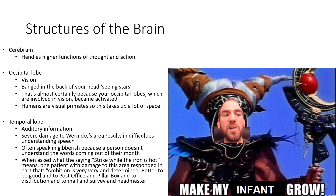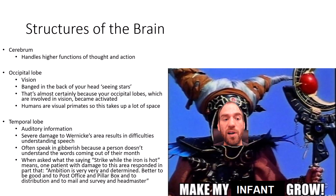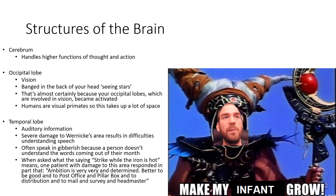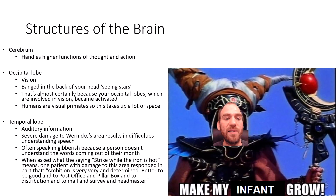Moving on to lobes: the occipital lobe is involved with vision. If you bang the back of your head and hit your occipital lobe, you will 'see stars' — almost certainly because those vision-processing areas become activated. In humans, the occipital lobe takes up more space than in other primates because humans are primarily a visual species who heavily depend on vision.